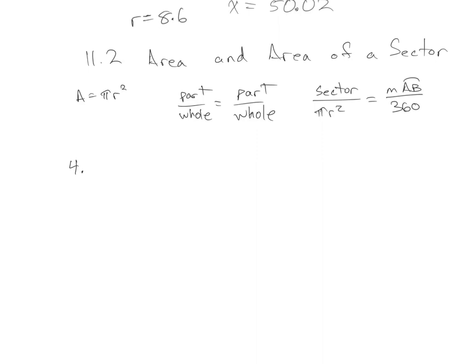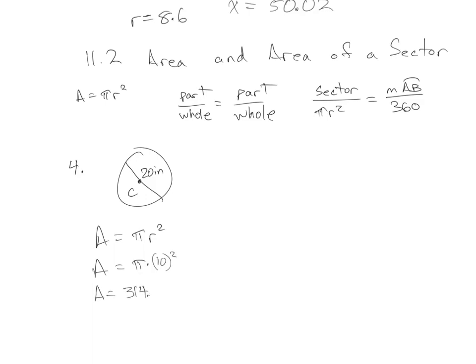Let's do number four. We have a circle and it gives us a diameter of 20 inches. The area of a circle is πr². Since the diameter is 20, the radius is 10. So the area would be π times 10 squared — that's 100 times pi on your calculator — and that's 314.2. If it doesn't say what to round to, go to your tenths. And this would be inches squared, because area is how many squares will fit into that circle.